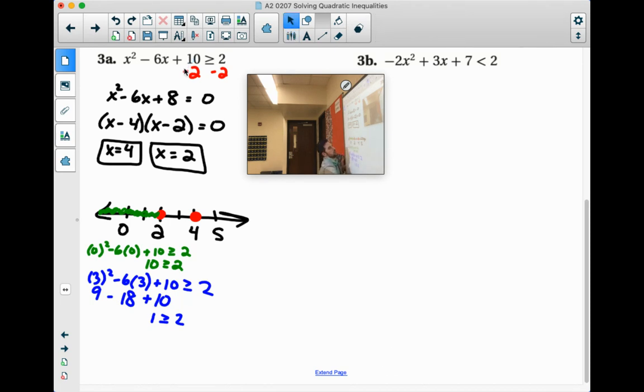All right. Our other chunk to the right, to the right of 4, we can use 5. You could use 20 if you want. 5 squared is 25. Negative 6 times 5 is negative 30. 25 minus 30 is negative 5 plus 10 is 5, which is greater than or equal to 2. So it also includes those values.